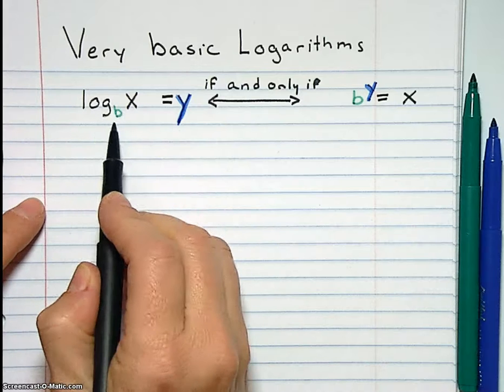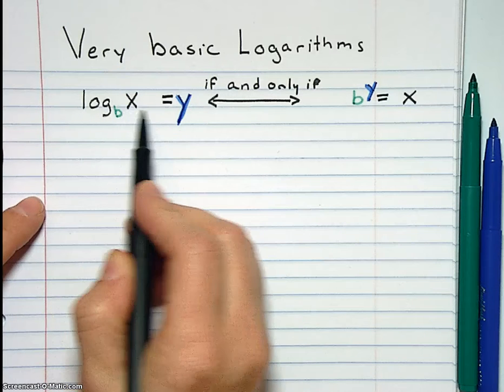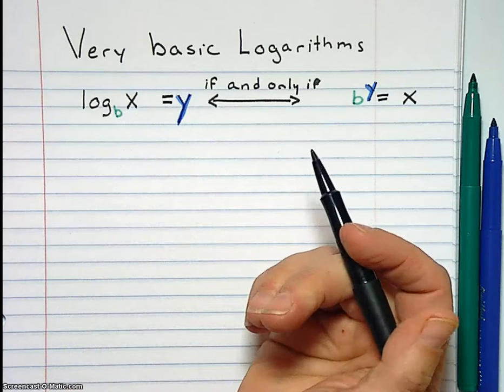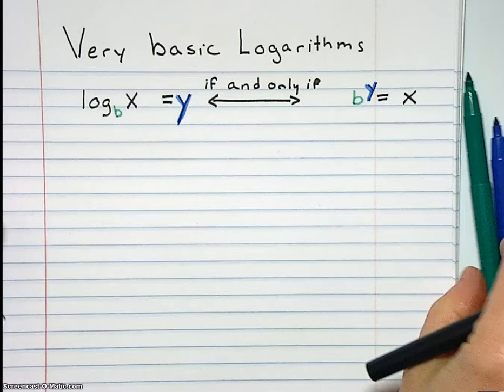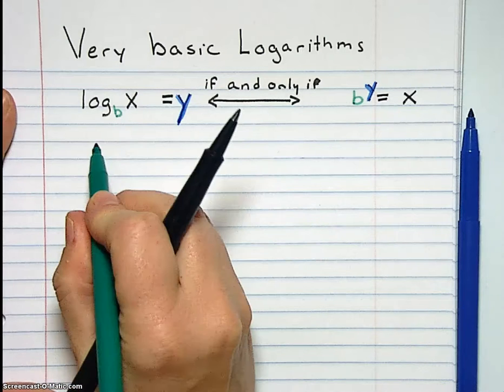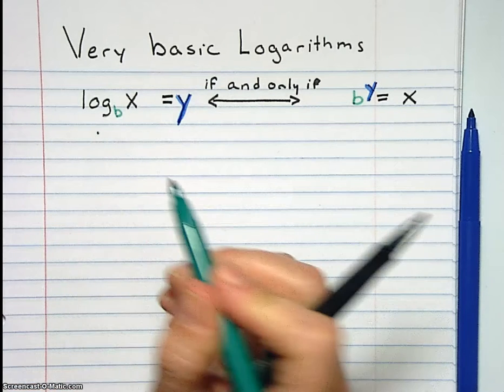I'm just going to tell you what the notation is and we're going to talk about what is going on there. This says log base b of x equals y. That's how you read that. And what it actually means is, oh no, this isn't an example yet.